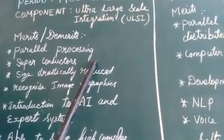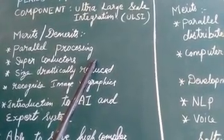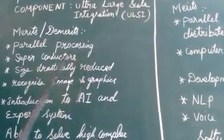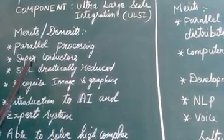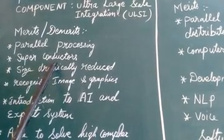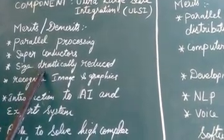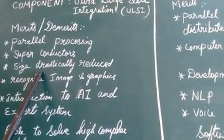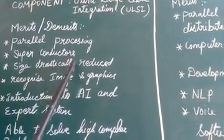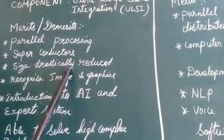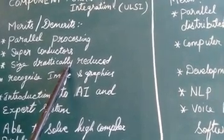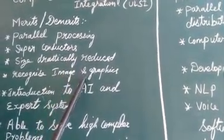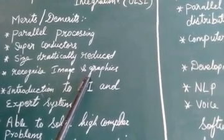Another feature is time sharing, or time-based processing. This is a superconductor. This is the size of a 5th generation computer, and this is a 4th generation computer shown for comparison.